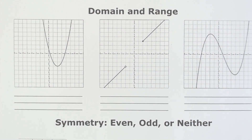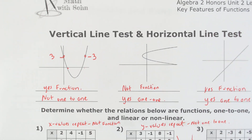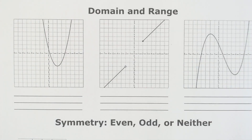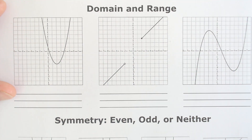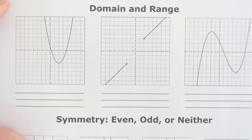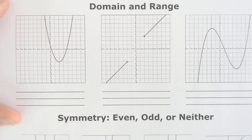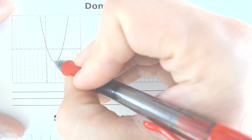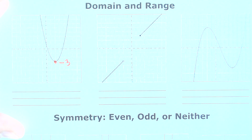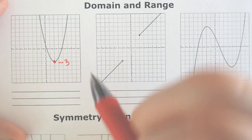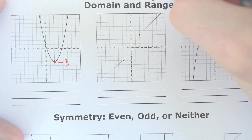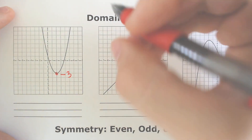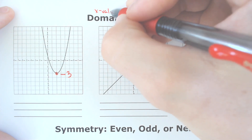Welcome back to part 2 of Functions 1 to 1, key features of graphs. Right now, we're going to be doing domain and range. Domain and range of a graph is going to be dictated by the x and y values. There are two ways that you can write them. The y values are represented by the range, and the x values are represented by the domain.